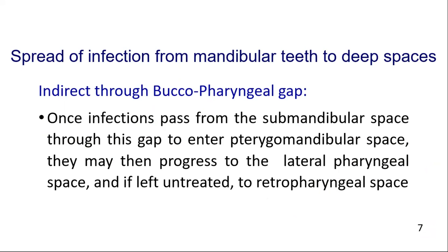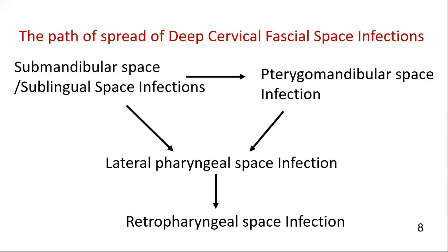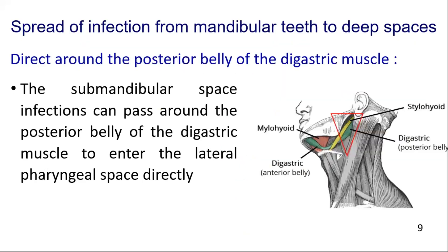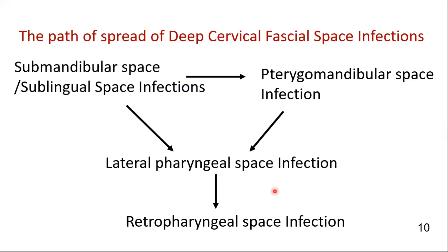There are two ways of spread of infections from the submandibular to the lateral pharyngeal space. One is direct through the buccopharyngeal gap — once infections pass from the submandibular space through the buccopharyngeal gap to enter the pterygomandibular space, they then progress to the lateral pharyngeal space and rapidly, if left untreated, to the retropharyngeal space. A second pathway of spread is directly around the posterior belly of the digastric muscle from the submandibular space to the lateral pharyngeal space.